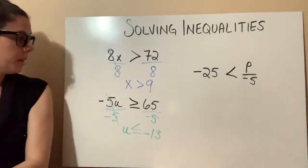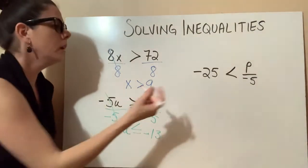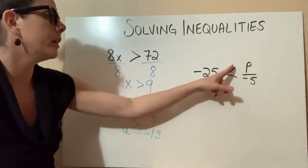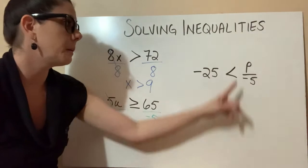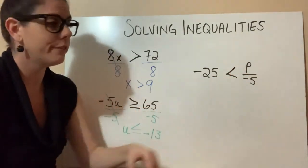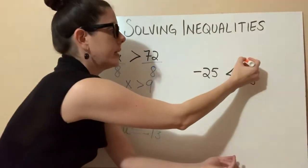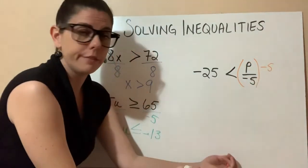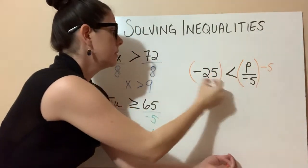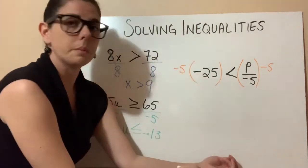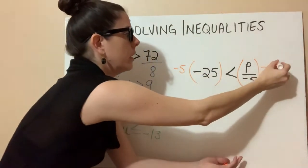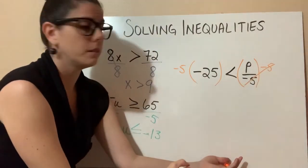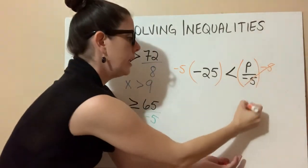Let's do that one more time in our next problem. We have negative 25 is less than p divided by a negative 5. To get this p by itself, we're going to multiply by a negative 5 on both sides. These negative 5s are going to cancel out, leaving a p on this side.